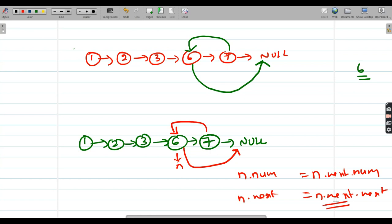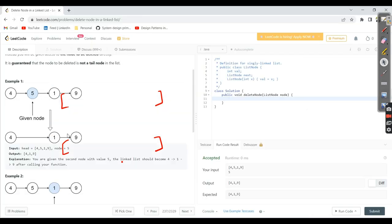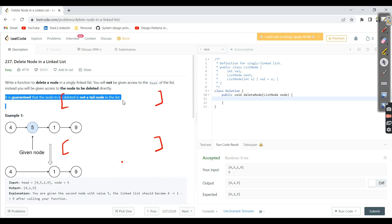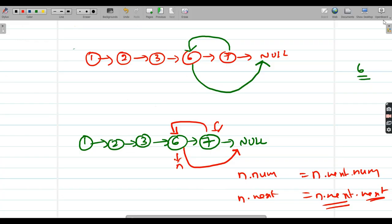You might think like what if node dot next is null. Let's assume like if they ask us to delete this 7. Node dot next is null and you are again performing next, it is going to throw us null pointer exception. But here is a point they given in the problem: it is guaranteed that node to be deleted is not a tail node. That means, if this is the list, our given node would be in the range of 1, 2, 3 and 6 only. It is not going to be 7. That is the strong point which we need to consider.